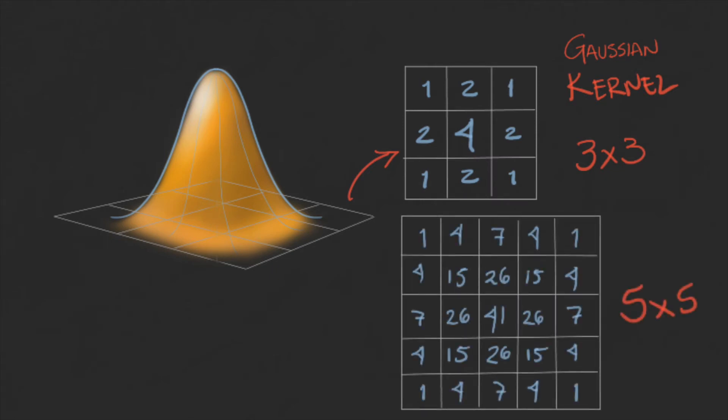The standard distribution of the Gaussian, or sigma, defines the shape of the bell. The choice of the sigma for the kernel depends on the application.